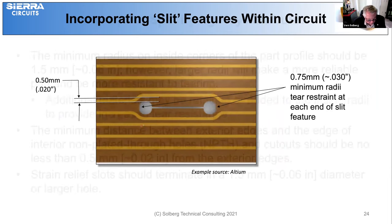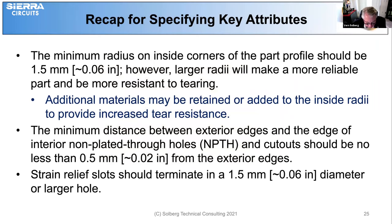To recap: the minimum radius on inside corners of the part profile should be 1.5 mm; however, a larger radius will make a more reliable part and be more resistant to tearing. Additional materials may be retained to add to the inside radius to provide increased tear resistance. The minimum distance between exterior edges and the edge of interior non-plated through holes and cutouts should be no less than 0.5 mm. Strain relief slots should be terminated with 1.5 mm diameter holes.